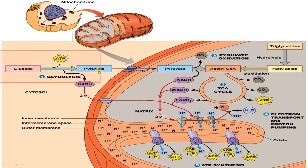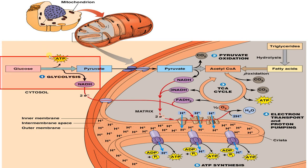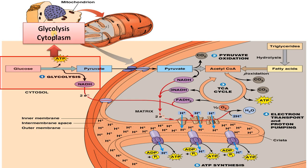This is an enlarged view of the cytoplasm. Here we have glucose that is converted to pyruvate, with the production of ATP and NADH.